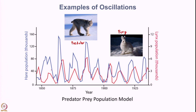Whenever the prey population becomes very large, the Lynx hunt these prey and the prey population diminishes, which results in an increase in the predator population, which also peaks. Then as fewer prey are available, the predator population falls. With fewer predators hunting the hare, the hare population thrives and increases at a much faster rate, and so on.